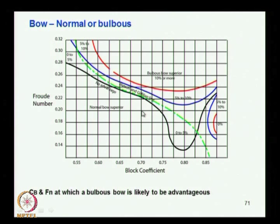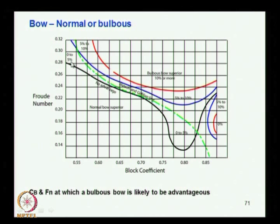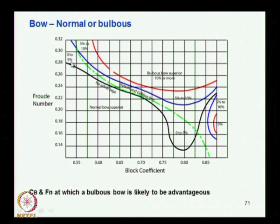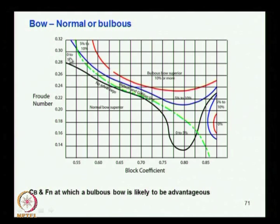The green line here is the Watson-Gilfant line, based on which it has been analyzed that below this line a bulb is not required, and above that line it is better to have one. The advantage of the bulb can be up to 15 percent, based on studies performed comparing the case with and without bulb for some types of ships — a power saving of about 15 percent.